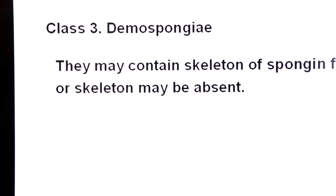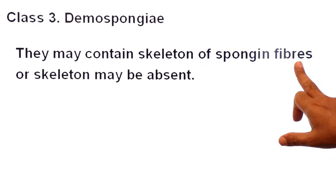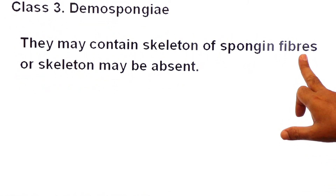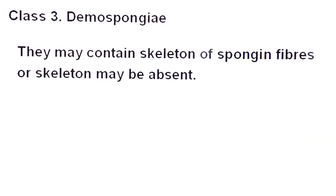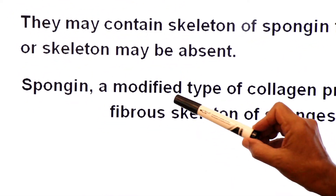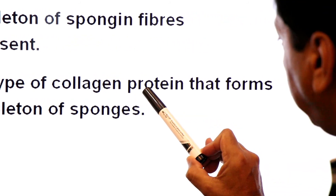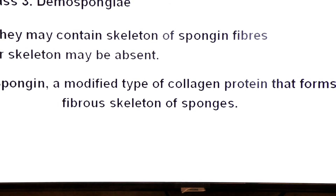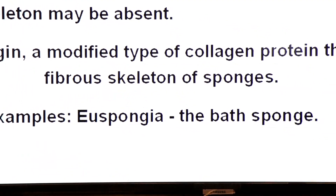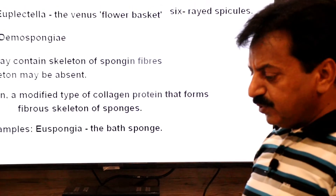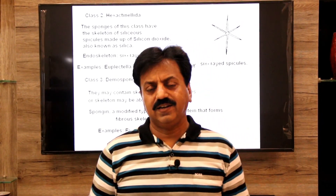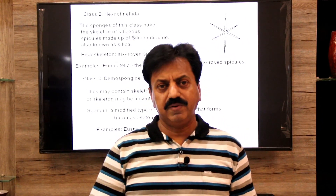Class 3: Demospongiae. They may contain a skeleton of spongin fibers, or the skeleton may be absent. Spongin is a modified type of collagen protein that forms the fibrous skeleton of sponges. Example: Euspongia, commonly known as bath sponge. Today we have discussed the main characteristics of phylum Porifera and its classification. Wish you all the best. Allah bless you.